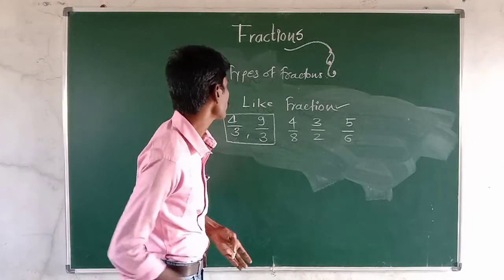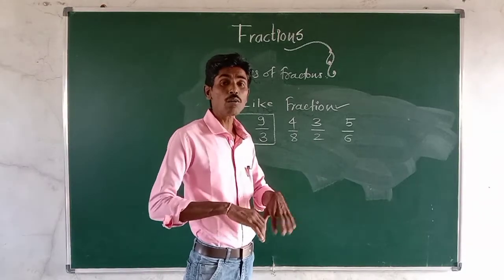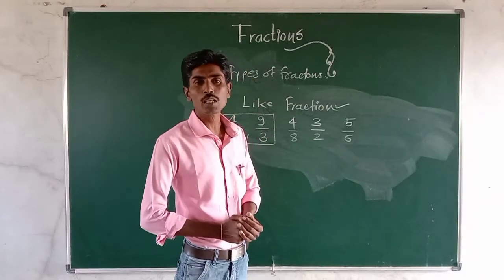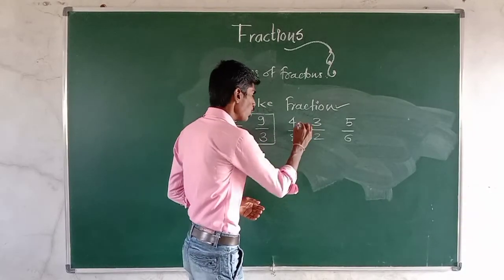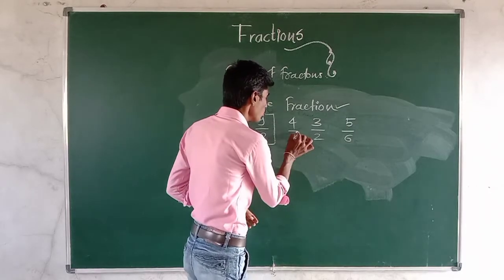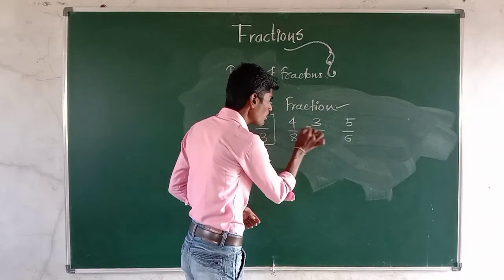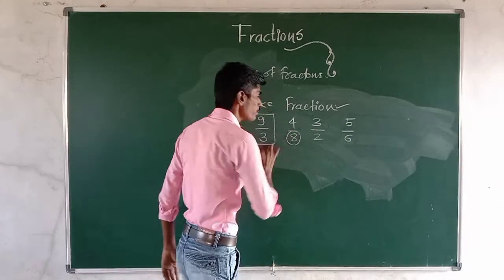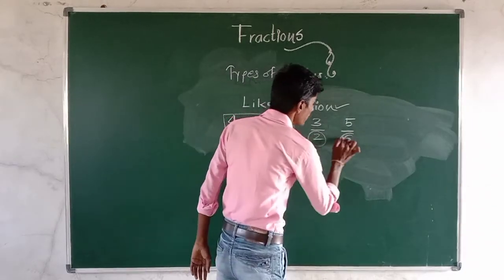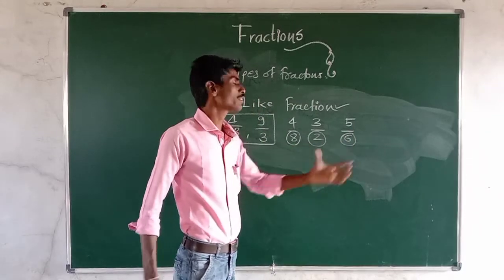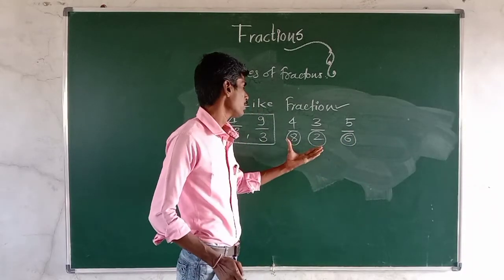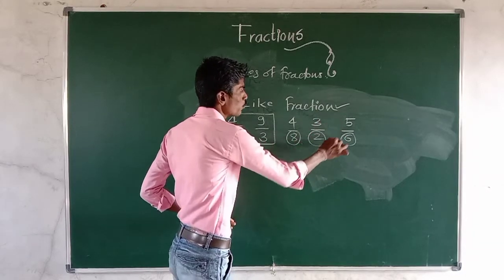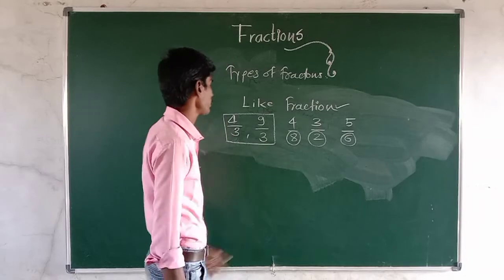Unlike fractions are fractions which do not have the same denominator. For example, 4 by 8, 3 by 2, and 5 by 6 — the numerators are 4, 3, and 5, but the denominators are 8, 2, and 6, which are all different numbers. That is why 4 by 8, 3 by 2, and 5 by 6 are unlike fractions.